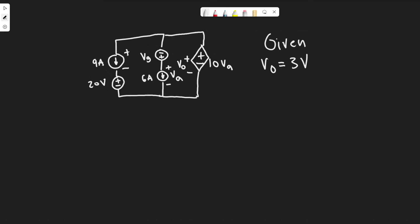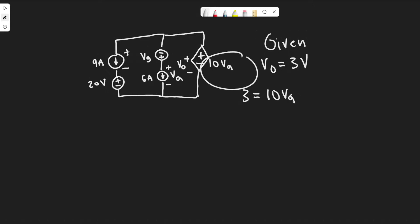The first thing they tell us is that V sub 0 is 3 volts. V sub 0 is labeled here, so we know the voltage across this element is 3 volts. We know that 3 is equal to 10·VA because they're both the voltage across it, just labeled two different ways. So VA equals 3 divided by 10, which is 0.3 volts.